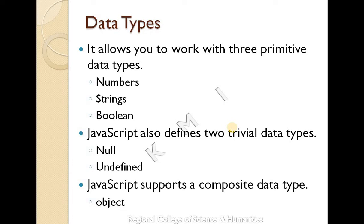We will classify these. Primitive data types: Numbers, String, Boolean. Trivial data types: Null, Undefined. Composite data types: Object. Numbers, String, Boolean are found in many programming languages; we will learn more details.